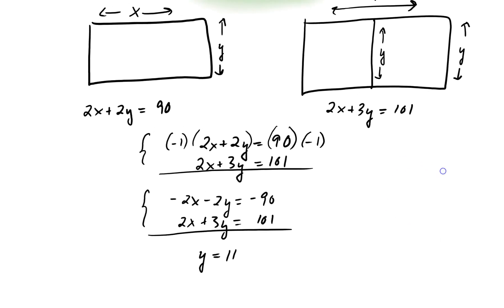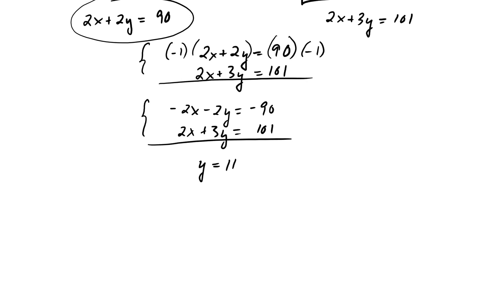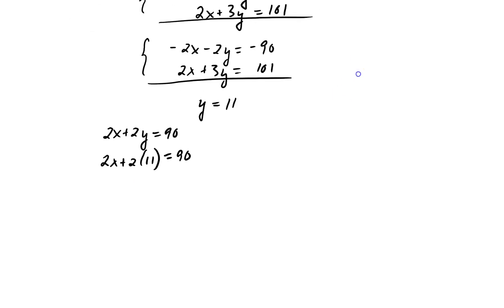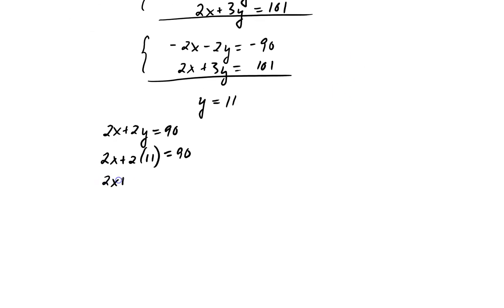Now, if you want to find x, you plug that y back into one of the equations. So how about I plug that y back into that equation to get x. So I have 2x plus 2y equals 90. If I plug in that y, 2x plus 2 times 11 equals 90. And that gives me 2x plus 22 equals 90.